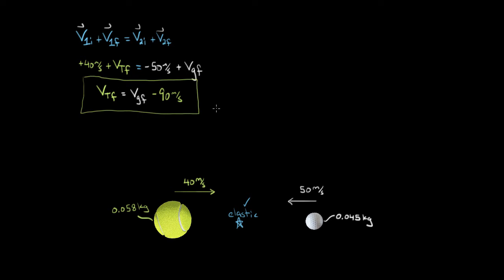This formula alone was not enough because I've still got two unknowns, so I've got to use another equation. The other equation we're going to use is conservation of momentum, because during this collision the momentum should be conserved. Assuming the collision happens so fast that any net external impulse is negligible, we can say the total initial momentum equals the total final momentum.